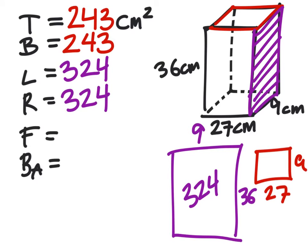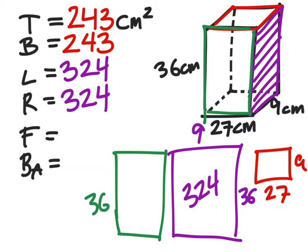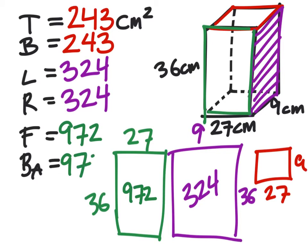Now we've got the front and the back, which gives us this rectangle, which when I draw it, I've got a 36 by 27. Let's take 27 times that 36, this is what we get, and that is 972, but the back is the same as the front.